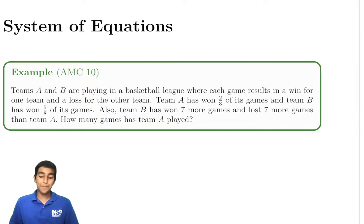Let's get started with this problem. Teams A and B are playing in a basketball league where each game results in a win or a loss. Team A has won two-thirds of its games, Team B five-eighths. But Team B has won seven more games and lost seven more games than Team A. How many games has Team A played?